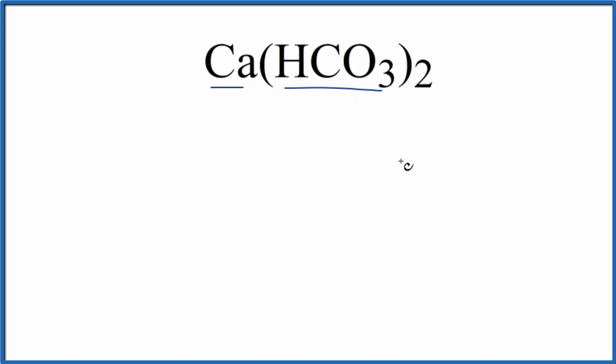So the first thing we'll do is write down the symbol for each of the elements. We have calcium, we have hydrogen, carbon, and oxygen. So these are the elements.